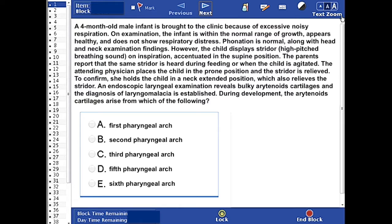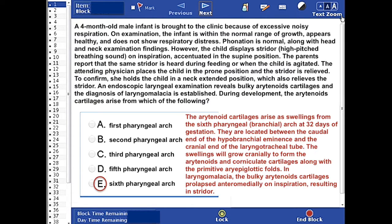Okay, the correct answer here is E. The arytenoid cartilages arise as swellings from the 6th pharyngeal, that is 6th branchial arch, at 32 days of gestation.